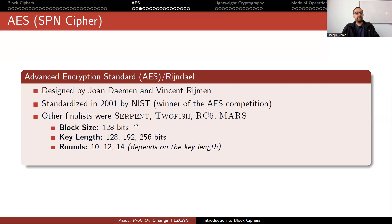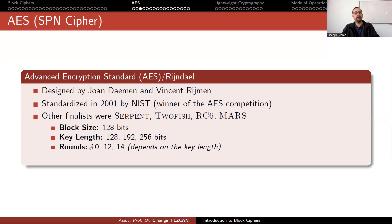AES has a block size of 128 bits. The key lengths defined by NIST before the competition are 128, 192, and 256 bits. Depending on the key choice, the number of rounds increases: 128-bit keys use 10 rounds, 192-bit uses 12 rounds, and 256-bit uses 14 rounds.